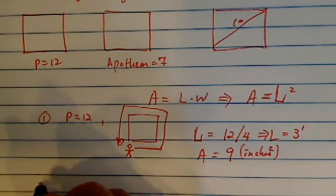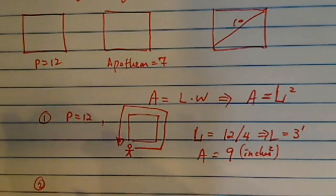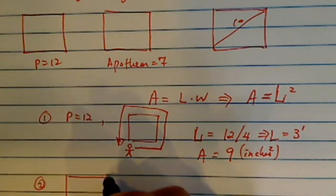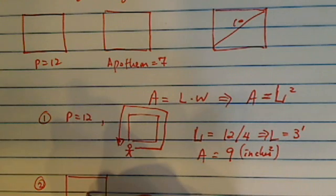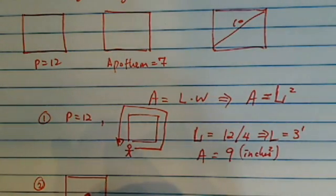Next case, apothem is just a fancy word to say that it's the distance from the center to one of the legs. Think of this one as a belly button to the end of the side. So if the apothem is 7, because it's from the center to the side, then I know the length is 2 times 7, or equal to 14.